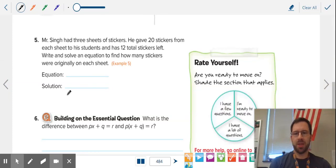All right, now we're on to this word problem. We have Mr. Singh with three sheets of stickers. He gave 20 stickers from each sheet to his students, and he has 12 total stickers left. Write and solve an equation to find how many stickers were originally on each sheet.